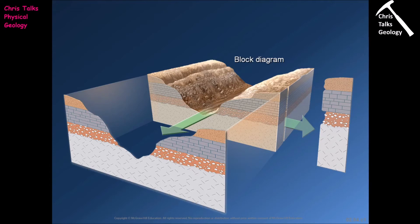The next method for producing a subsurface diagram is a cross-section, arguably the most common method used by geologists. A cross-section is simply a diagram that shows what would happen if we were to take a slice through the earth between two locations. Geologists pick a starting point and an end point — referred to as A and A' — and the line between those two points is called the line of section. The cross-section represents what we would see if we took a giant knife and cut open the surface of the earth between points A and A'.